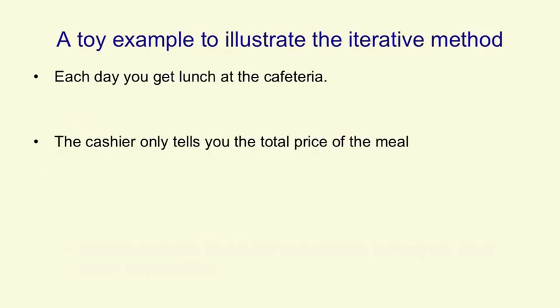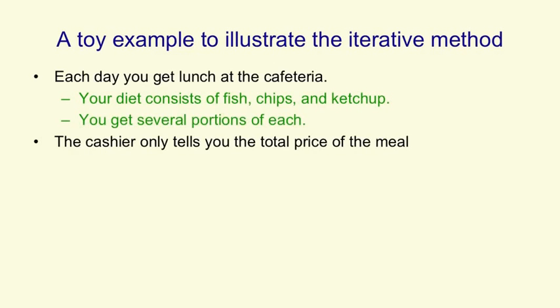I'm now going to go through a toy example that illustrates an iterative method for finding the weights of a linear neuron. Suppose that every day you get lunch at a cafeteria, and your diet consists entirely of fish, chips, and ketchup. Each day you order several portions of each, but on different days it's different numbers of portions. The cashier only tells you the total price of the meal, but after a few days you ought to be able to figure out what the price is for each portion.